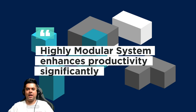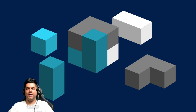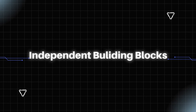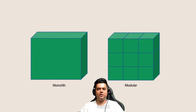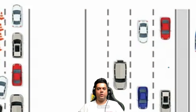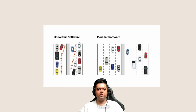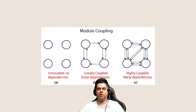Highly modular systems enhance productivity significantly, which is why modularization is the first concept tackled in this system design course. No matter what you're designing, you need to always focus on making it more modular. A great way to visualize modularity is independent building blocks that can be placed on top of each other to form an entire system. A modular system is the exact opposite of a monolith, where everything is tightly coupled. A monolith can be converted into a modular architecture by making the individual components more loosely coupled — an advanced concept we'll cover when discussing decomposition and decoupling later in this series.